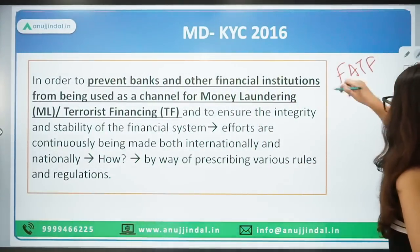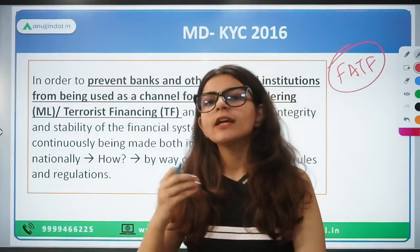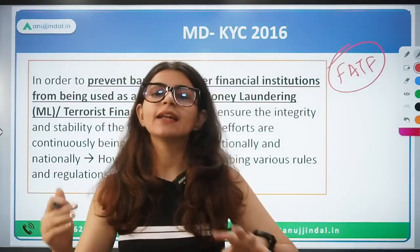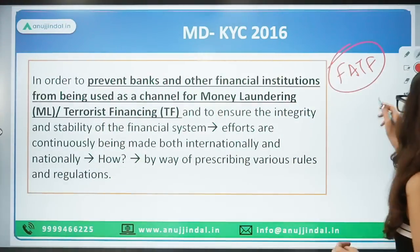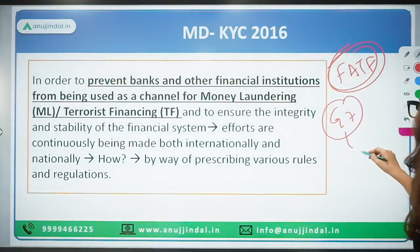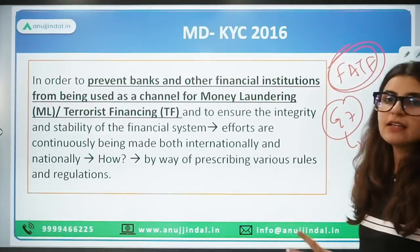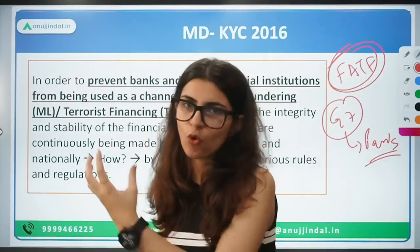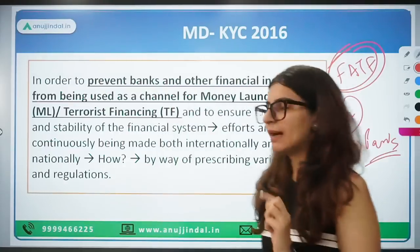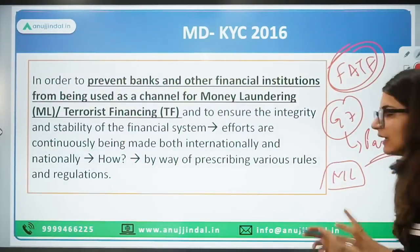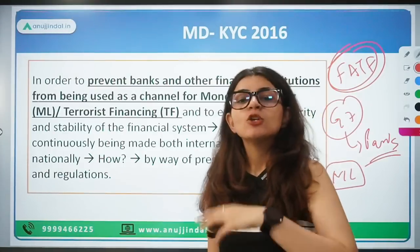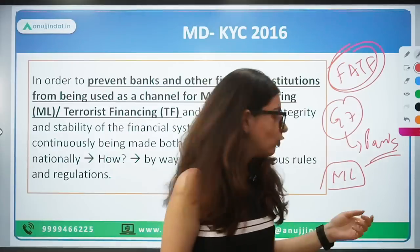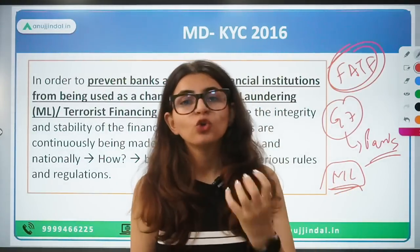We all know about money laundering. To bring out measures towards curbing money laundering, an international organization was formed as FATF. There was a meeting of G7 in Paris, after which it was decided that FATF — Financial Action Task Force — will be formed to work towards money laundering. Going forward, when I write ML, it will mean money laundering. This Financial Action Task Force is an international organization working towards bringing measures to curb money laundering.